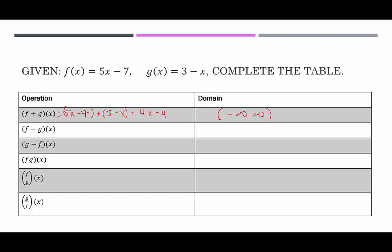The difference function f − g is (5x − 7) − (3 − x). We need those parentheses. Distributing the subtraction sign, we get 5x − 7 − 3 + x, which combines to 6x − 10. That's also a linear function with no restrictions on the domain.